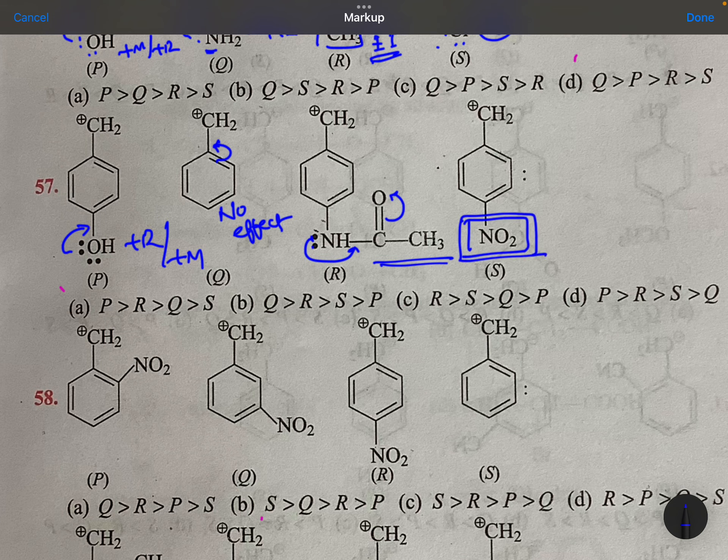Now these kind of groups are very dangerous, so it should be least stable. How many options are there? Only one option, so this is your answer. P is best because plus R effect, then nitrogen, no effect, then S.